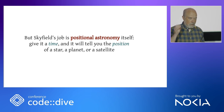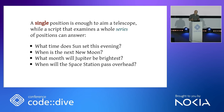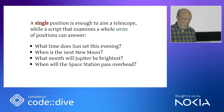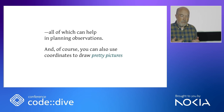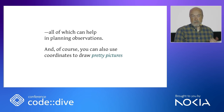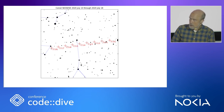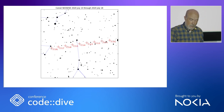Give Skyfield a time and it will tell you the position of a star, a planet, or a satellite. A single position is enough to aim a telescope, while a script that examines a whole series of positions can answer: what time does the sun set this evening? When is the next new moon? What month will Jupiter be brightest? When will the space station pass overhead? All of which can help in planning observations. You can also use coordinates to draw pretty pictures — here, drawn with Skyfield, is a star chart showing a recent comet and where you could find it among the stars.